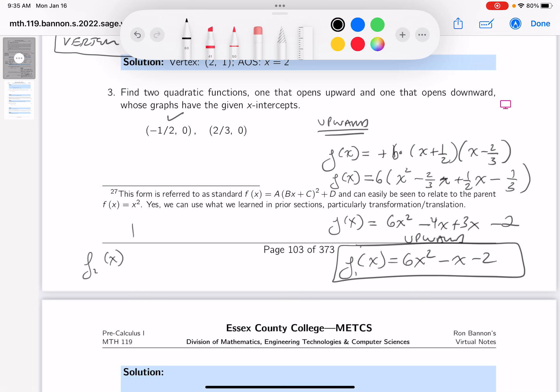a downward-facing one. I'll write this over here. Just multiply it by minus 1. What do you get? Minus 6x squared plus x plus 2.